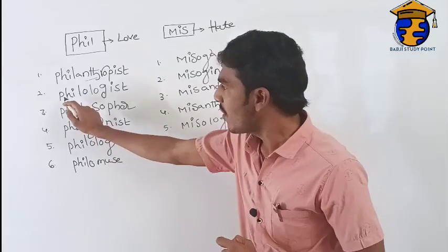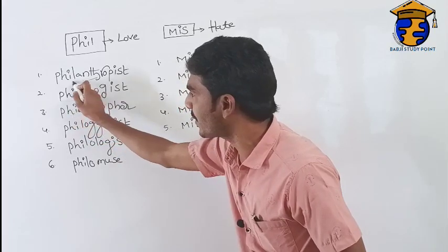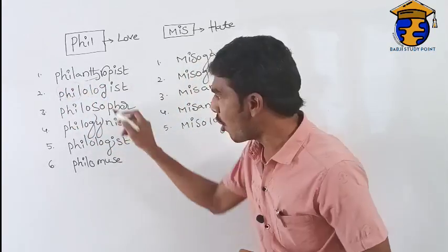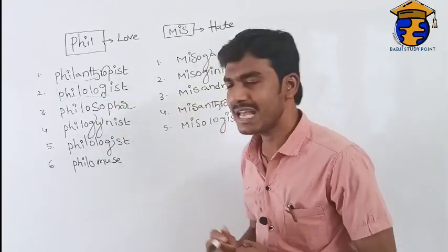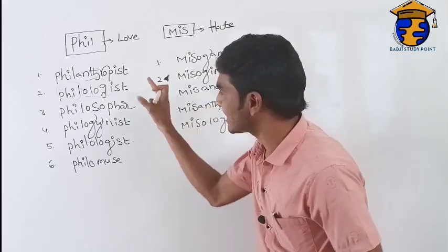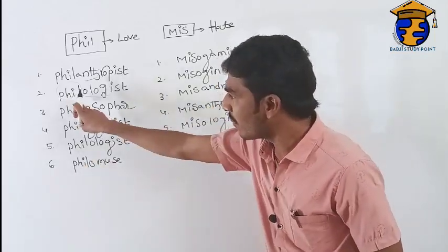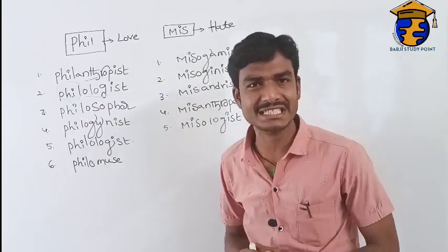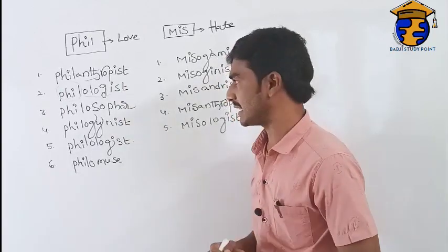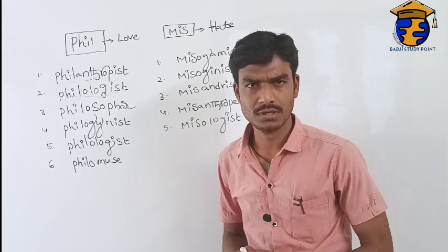The next word is 'philologist.' The prefix 'phil' means love, and 'logos' means word. So a lover of words is called a philologist.